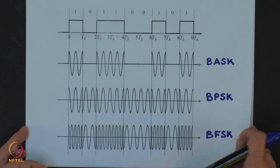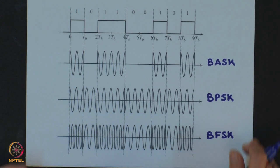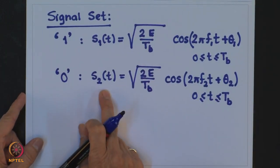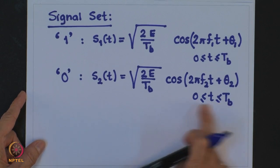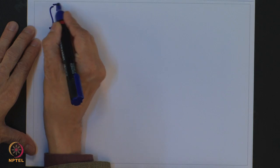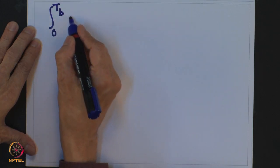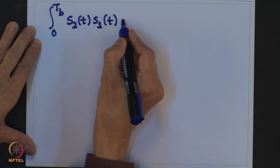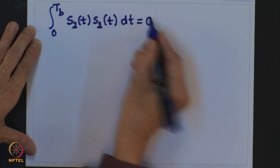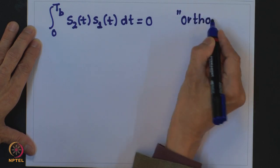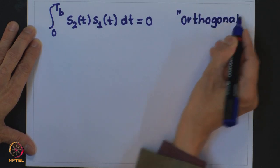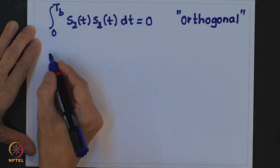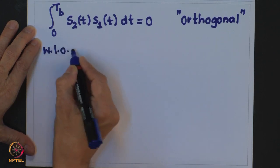Before we go ahead, it is important to know when the two signals s1(t) and s2(t) would be orthogonal over the period from 0 to Tb. The question is: when would s1(t) and s2(t) be orthogonal? That means they must satisfy the orthogonality condition — the inner product integral must be equal to zero. Let us find the answer to this question.